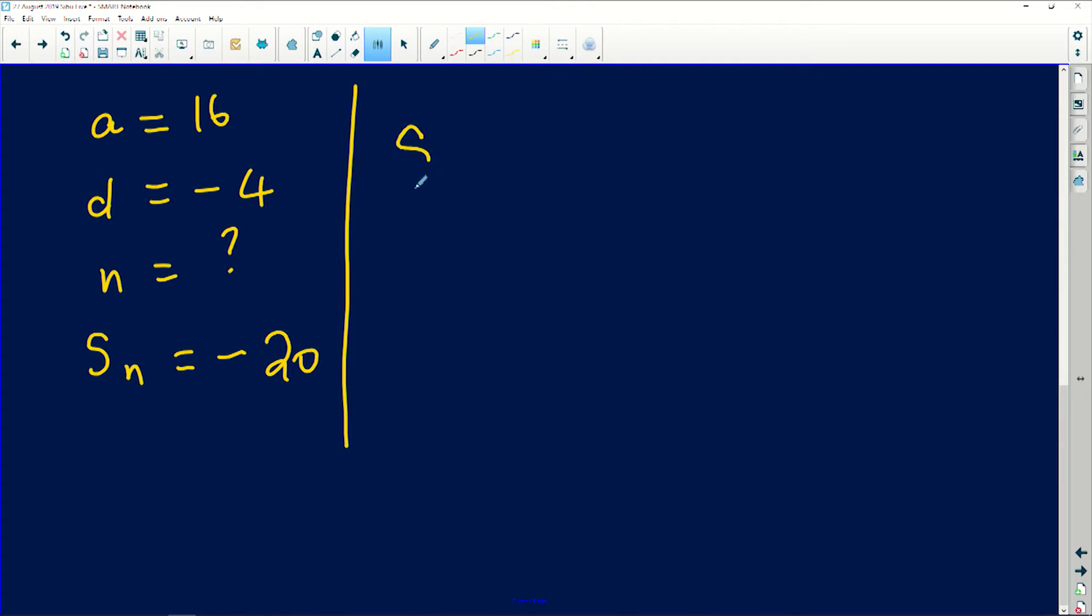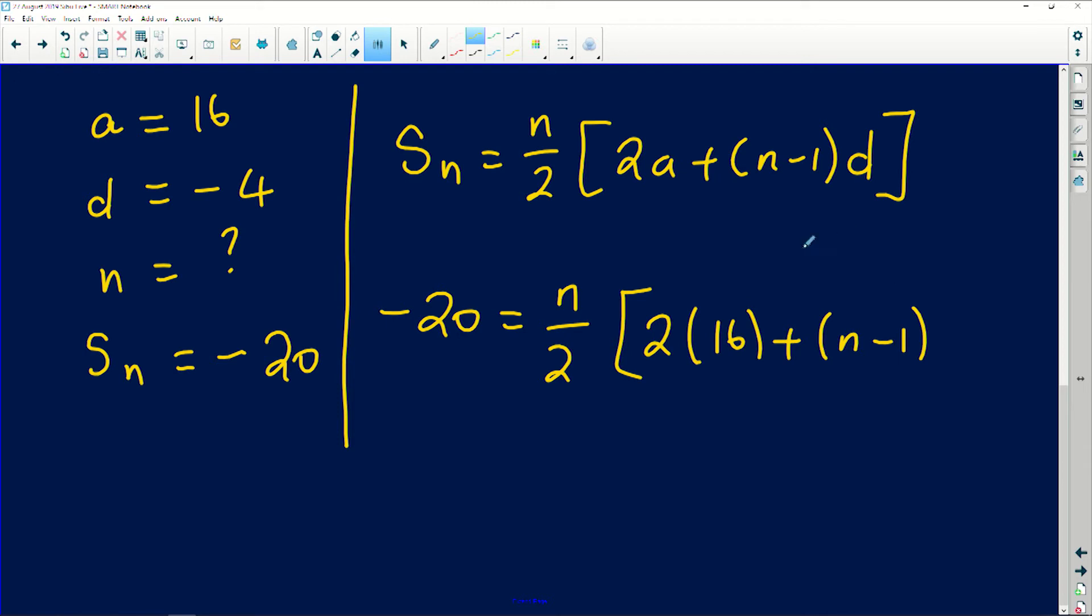So what you will do here is write Sn equals n over 2 times 2a plus n minus 1 multiplied by the common difference. This is the formula for the summation. What is our sum? We were given negative 20. How many times are we adding? We don't know that; that is what the examiner is asking us to figure out. So 2 times your a value is 16 plus n minus 1, the common difference was given to us as negative 4.